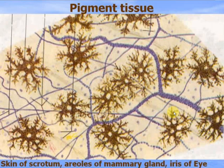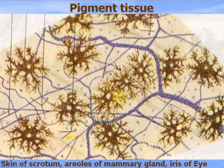Pigment tissue consists of pigment cells — melanocytes — which produce pigment inclusions melanin. This tissue is available in the skin of the scrotum, also mammary glands, and iris of the eye. These regions have a brown color.